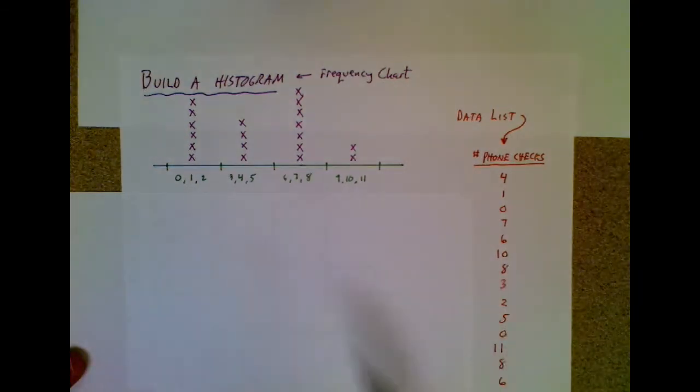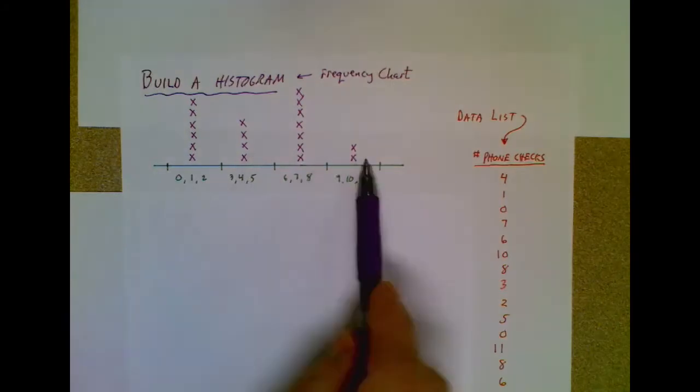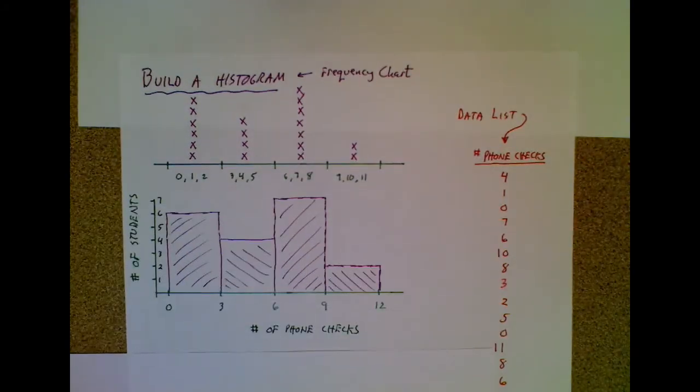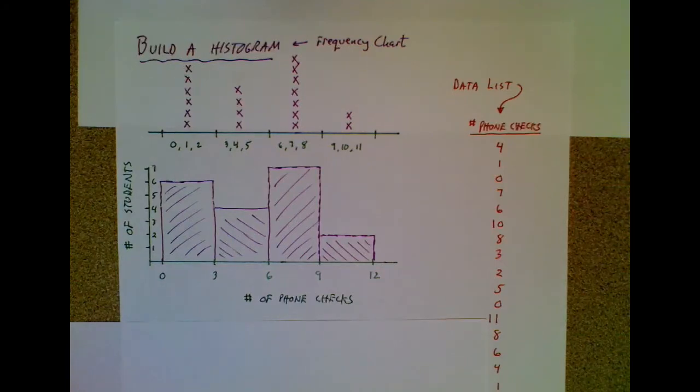So we've taken the list and started to convert it into our histogram, and now we're going to take this very basic one and pretty it up, and then we're going to be finished. So right below this is the prettied up version. And let's take a look.